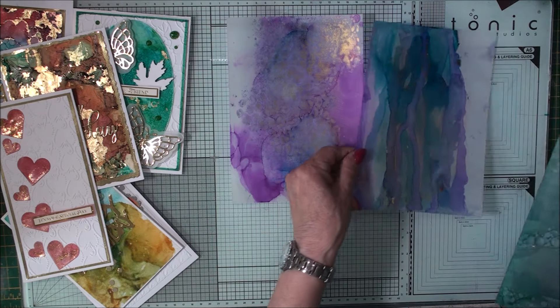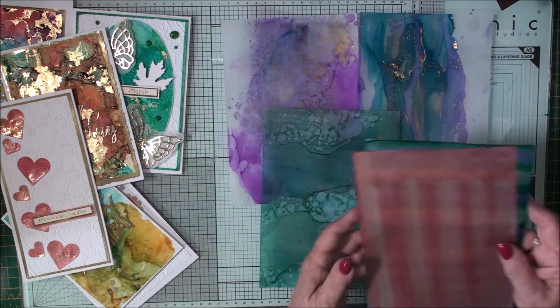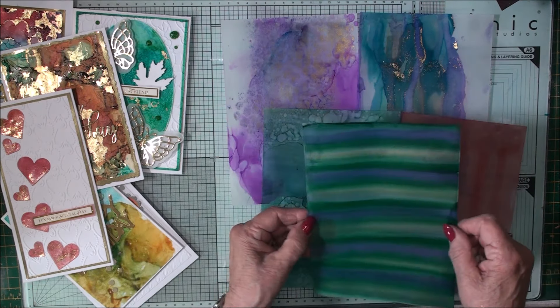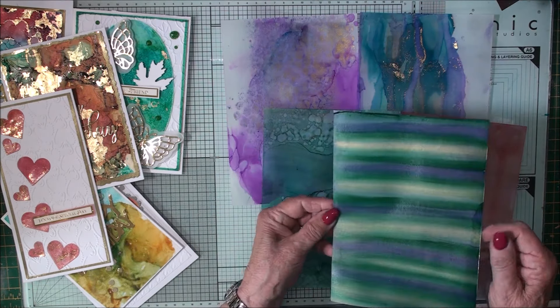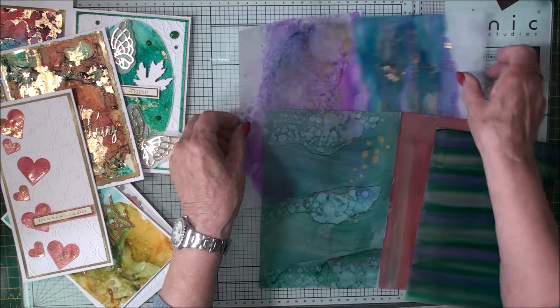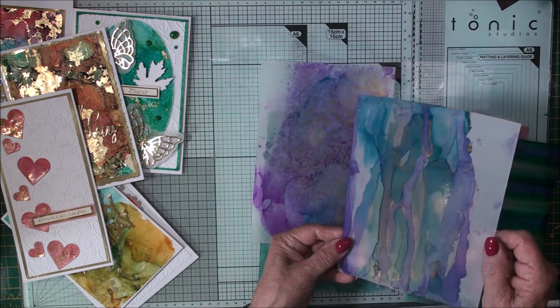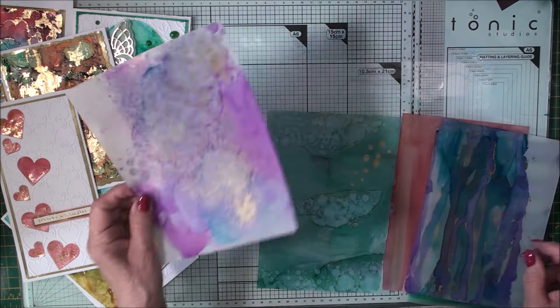So this is a stripy one. This is some with gold foil on it. This is red and gold stripes and this is blue and green gold stripes.